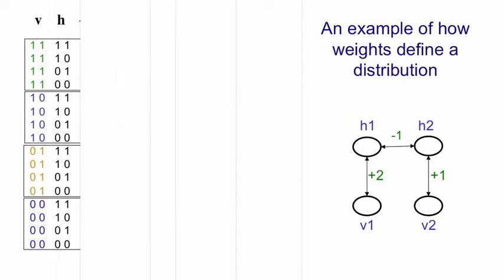Now, for each of those joint configurations we're going to compute its negative energy, minus E. So if you look at the first line, when all of the units are on, the negative energy will be plus 2, minus 1 plus 1 is plus 2. And we do this for all 16 possible joint configurations. We then take the negative energies and we exponentiate them and that will give us unnormalized probabilities.